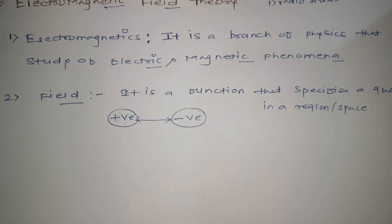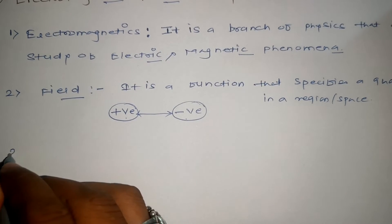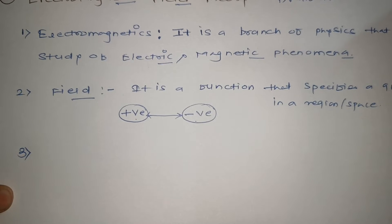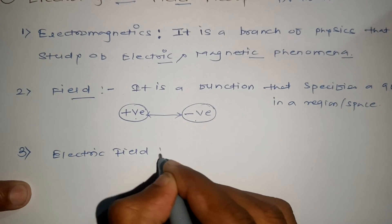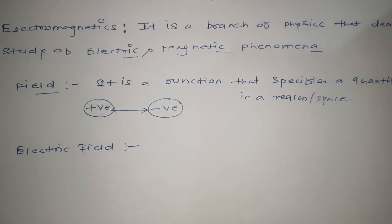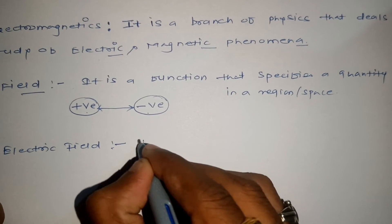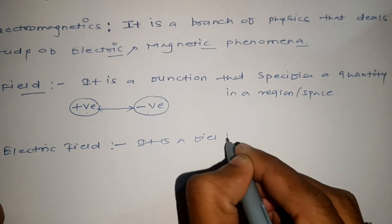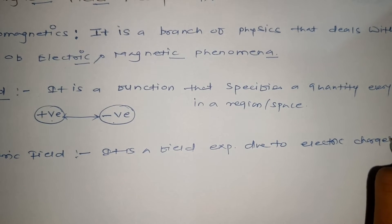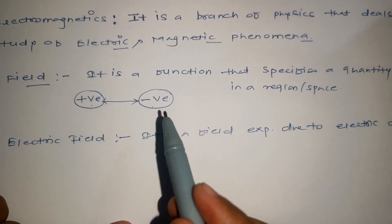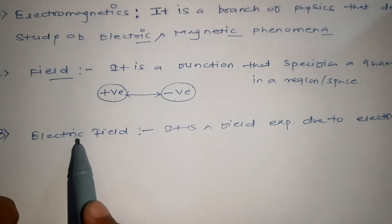Field generation can be of two types: electric phenomena or magnetic phenomena. Based on that, we have three basic types of fields. The first one is called the electric field — a field which is experienced due to electric charges. These could be positive or negative charges experiencing a force of attraction or repulsion, and we call it the electric field.